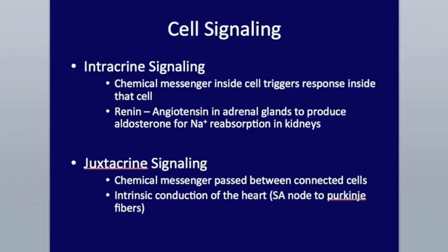We have juxtacrine signaling — chemical messengers passed between connected cells. An example is the intrinsic conduction of the heart. There's a signal that goes from the top down to the apex of the heart into the Purkinje fibers, which filter into the walls of the ventricles. It goes from the SA node down through the interventricular septum into the walls of the ventricles. That's juxtacrine signaling.